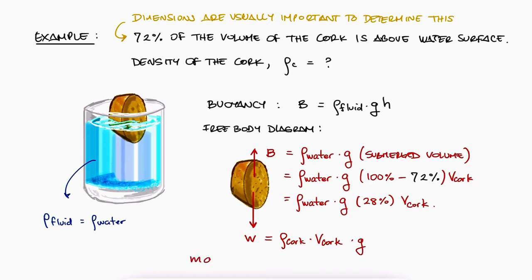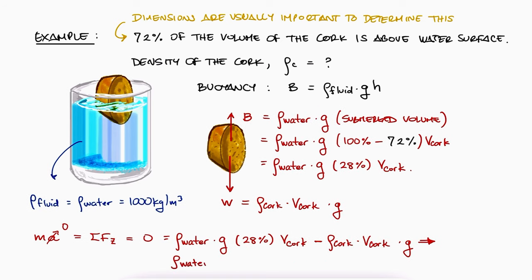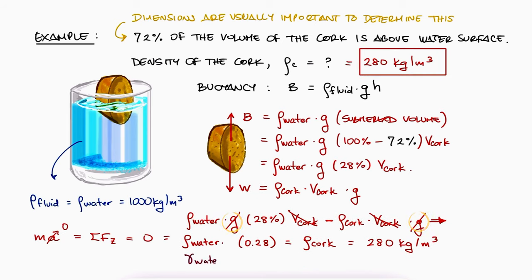Since the cork is not accelerating up or down, the sum of forces is zero. Assuming a simple density of water of 1000 kilograms per cubic meter in metric, we can solve for the density of the cork to be 280 kilograms per cubic meter. We could also keep the gravity term and use the specific weight of 62.4 pounds per cubic foot for water to find the specific weight of the cork to be 17.7 pounds per cubic foot.